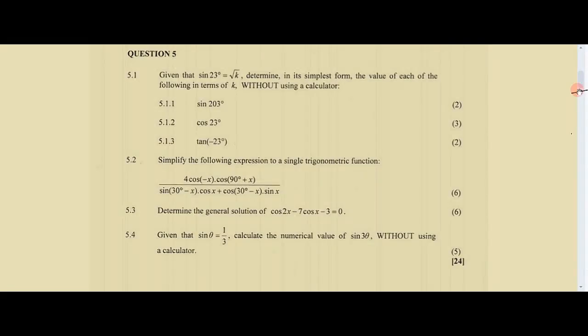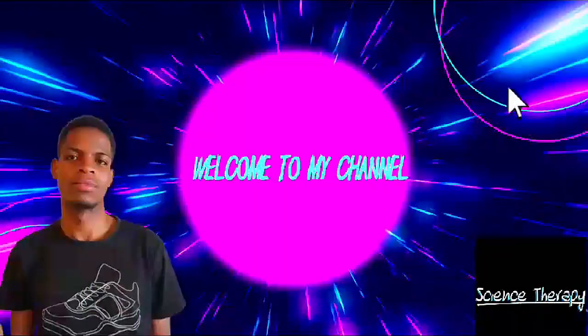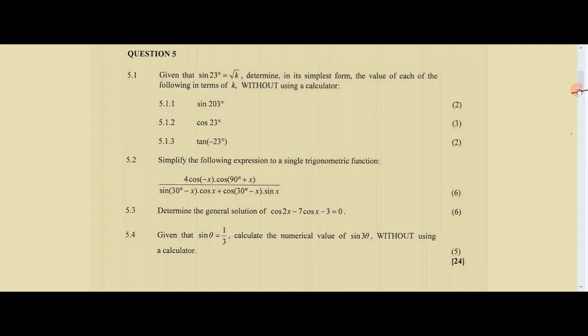Hello Grade 12s, welcome back to the channel Science Therapy. Without any further ado, let's look at these questions. We have Question 5 on trigonometry: given that sine 23° = √k, determine in its simplest form the value of each of the following in terms of k without using a calculator. Since they say without using a calculator, we know we must solve this with the aid of a diagram.